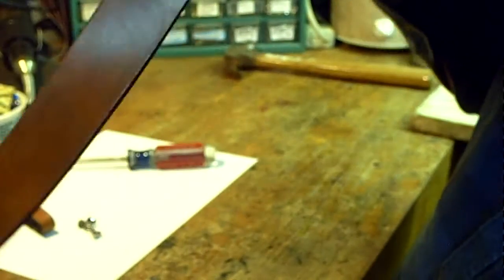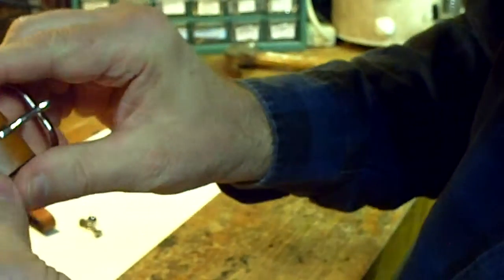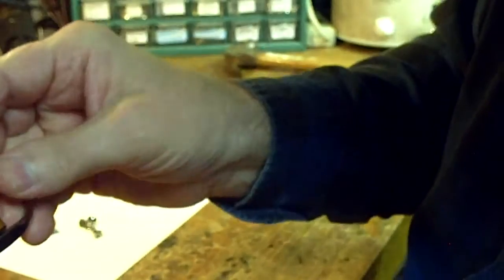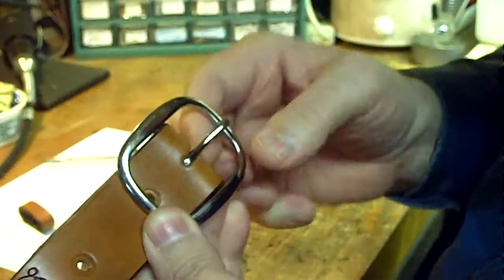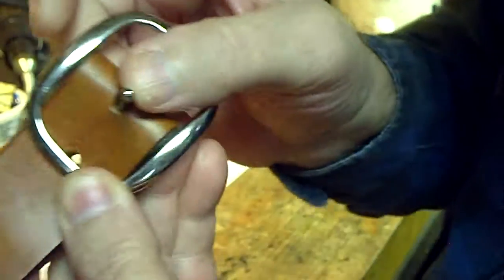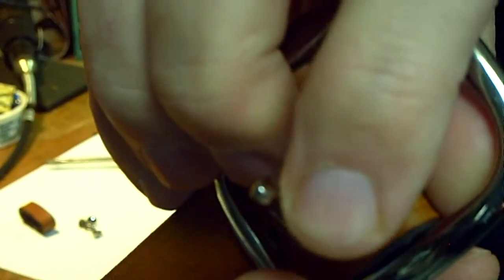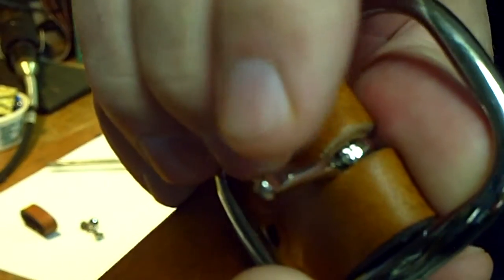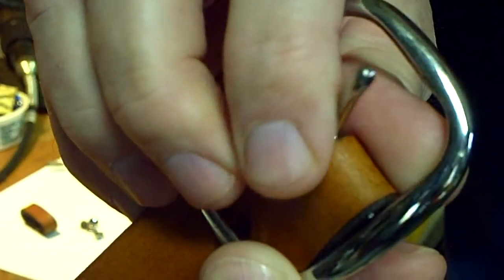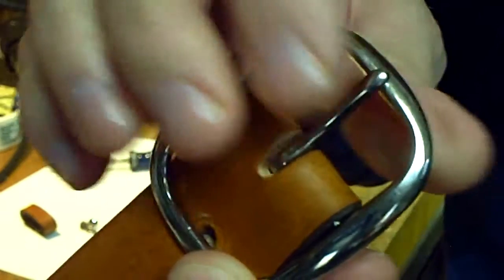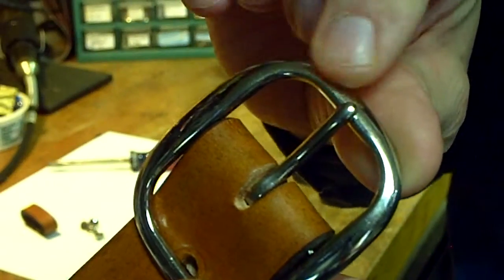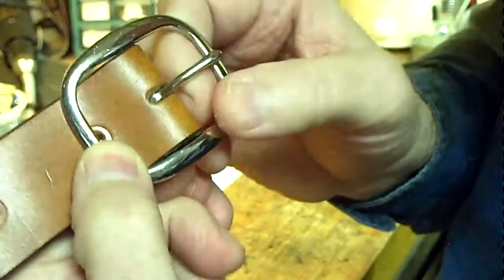There. Now we've got that on there. Now, the secret is, make sure that you, I don't know if you can see it. See the little flat section right here on this pin? Make sure that that's laying down, because that lays over the metal here. And there, you have it on there.